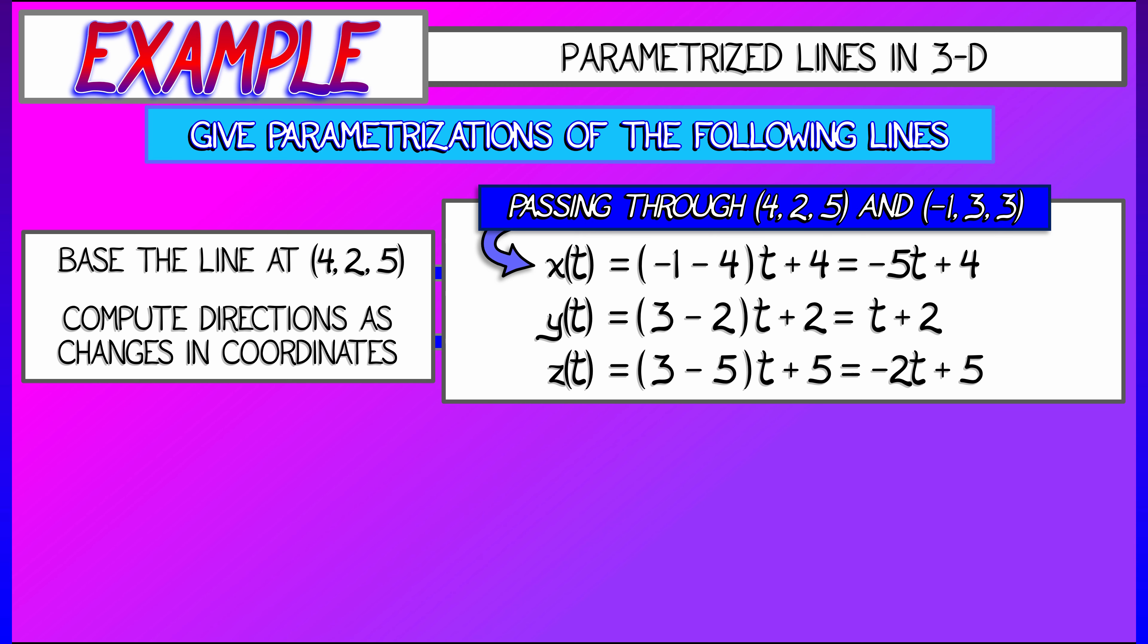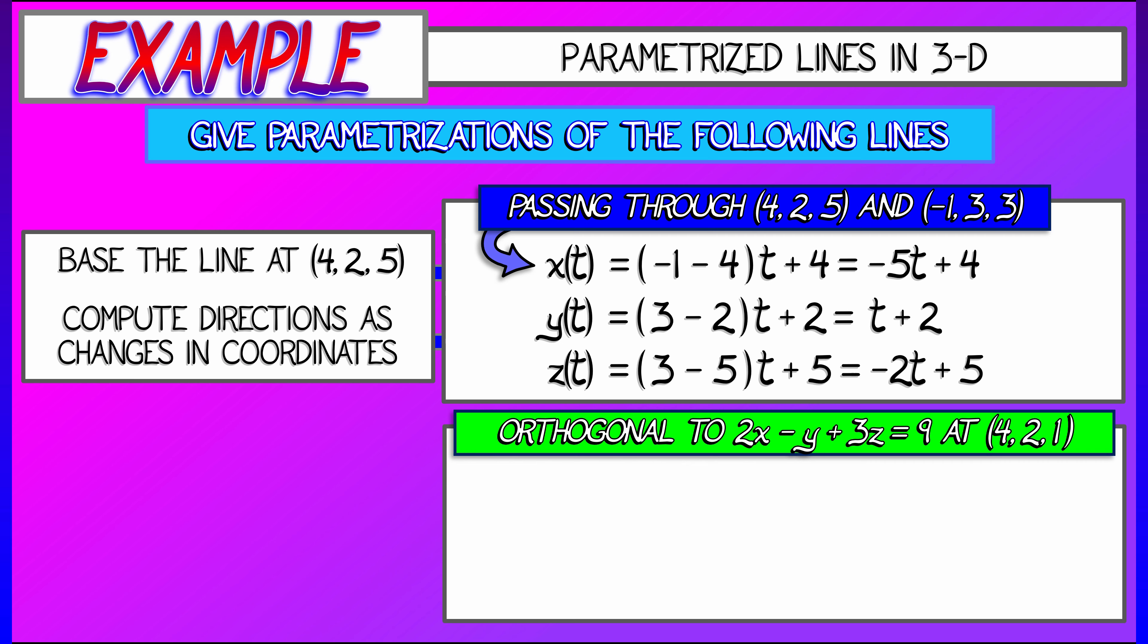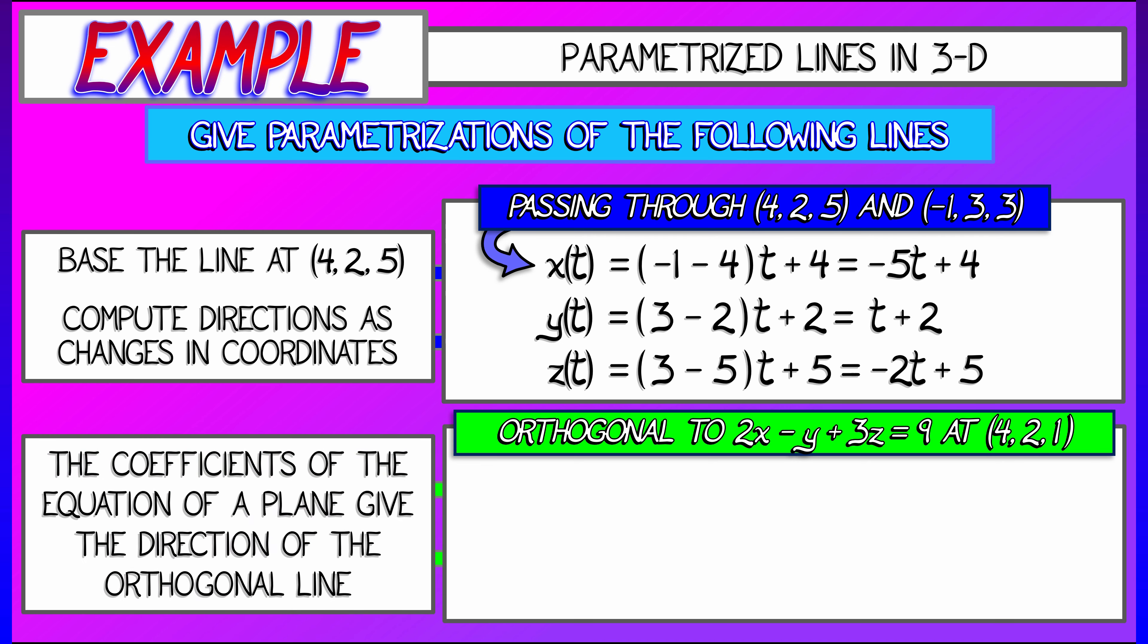All right, here's another one. Let's say I want a parameterized line orthogonal to the plane given by 2x minus y plus 3z equals 9 at the point 4, 2, 1. Now, we've got our base point. And what's going to matter about that plane is the coefficients, 2, negative 1, 3, out in front. Those slopes are telling you something about the direction orthogonal to that plane. So we're going to use those as the coefficients in front of the t terms. So x of t is 2 times t plus 4. Where that 4 is the x-coordinate of the base point. Doing the same for y, we get y of t is negative t plus 2. And z of t equals 3t plus 1.